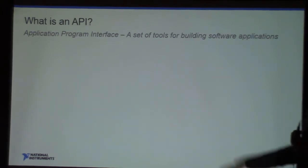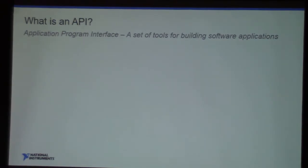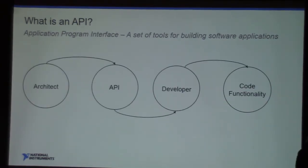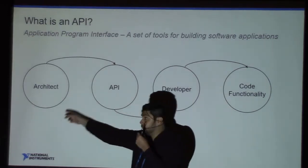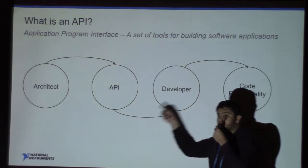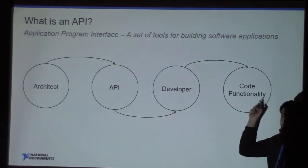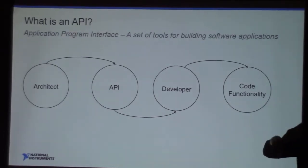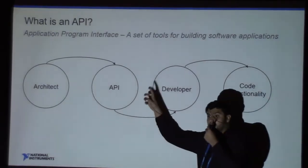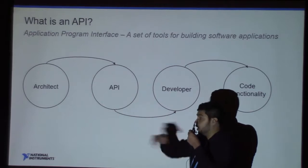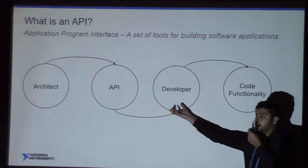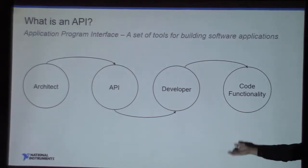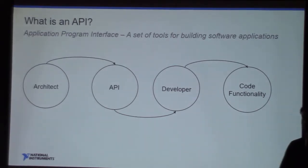First of all, what is an API? It's a set of tools for building software applications. In LabVIEW we have some options; here we're going to focus on LabVIEW libraries. The architect develops the API, and the API will be used by developers to achieve some code functionality. What we're going to do here is put your code together and deliver it for the developer — or for yourself — to achieve the same code functionality that your application used to have.